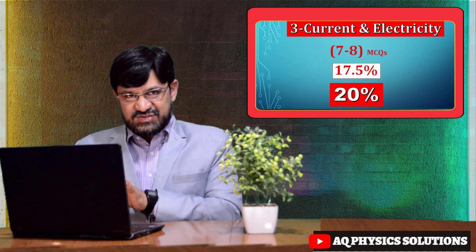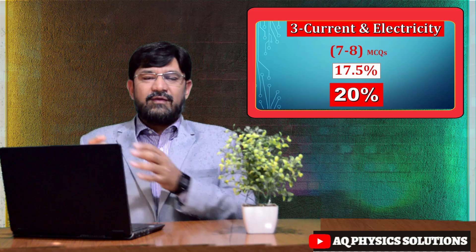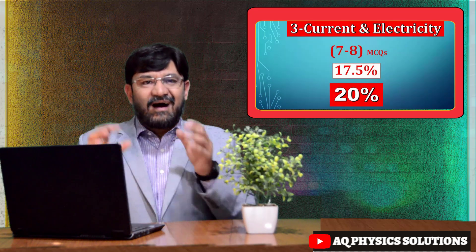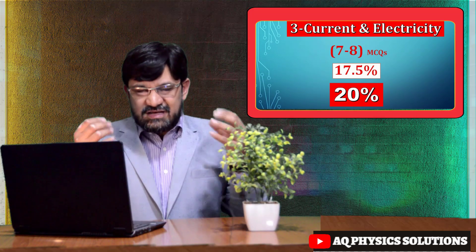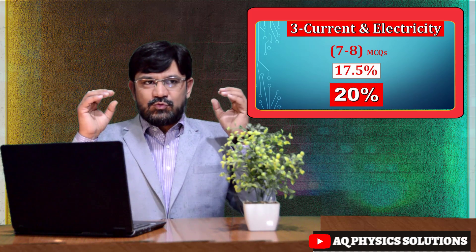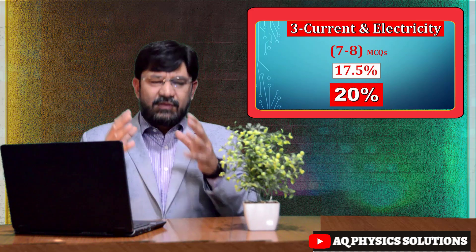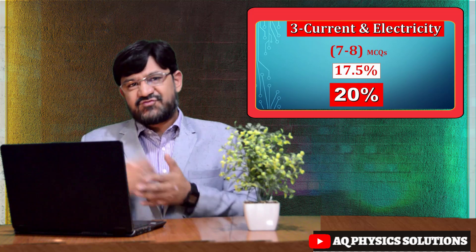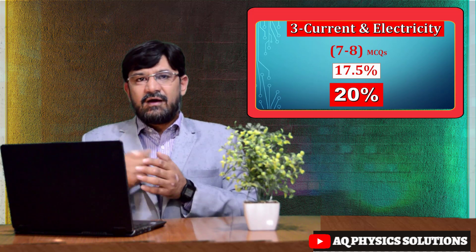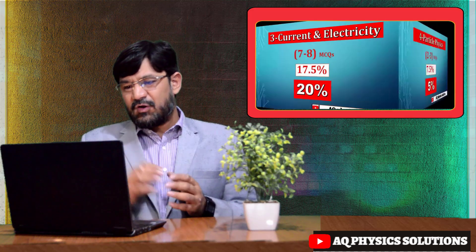Current and electricity is a difficult area — most students are trapped by its MCQs. Without a plan, attempting these blindly wastes time. If you are strong in waves and superposition and general physics, attempt that combined 75 percent first and save time from current and electricity.